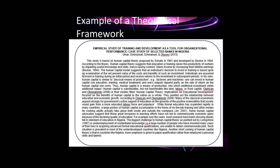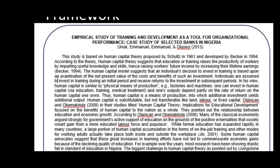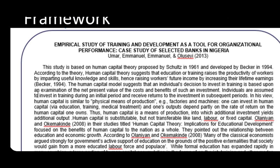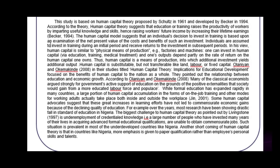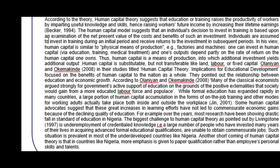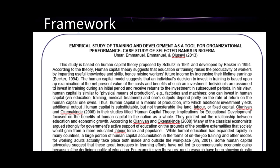Here is an example of a study you can read in your module: the study of Umar, Emmanuel, and Uloseyeh — an empirical study of training and development as a tool for organizational performance, the case study of selected banks in Nigeria. The authors used only one theory — the human capital theory — as their theoretical framework, because it can already support their results. However, it is also probable that you can use more than one theory in your study, so long as those can support your objectives. It would depend on the problem of your study.